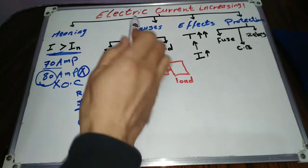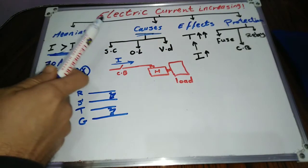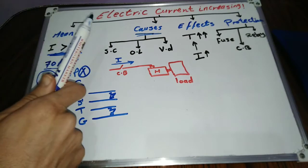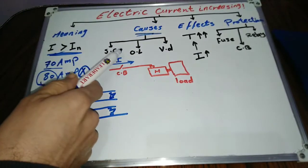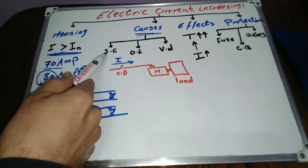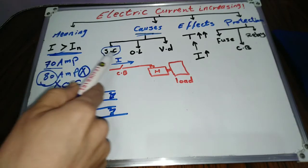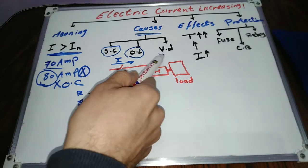What causes current to increase in a circuit? As the overcurrent is a kind of abnormal condition, the causes of it are all abnormal conditions. The most common abnormal conditions are short circuit, overload, and voltage drop.